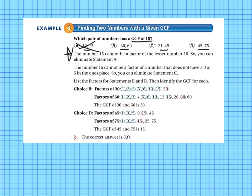The number 15 cannot be a factor of a number that does not have a 0 or 5 in the ones place. So 21 has a 1 in the ones place. So C doesn't work. And then it says list the factors for statements B and D and then identify the greatest common factor for each. So factors of 30 are 1, 2, 3, 5, 6, 10, 15, and 30. And when we circle the common factors, the common factors are in blue. The greatest common factor is in red. So the greatest common factor for 30 and 60 is 30. That's not what we're looking for.